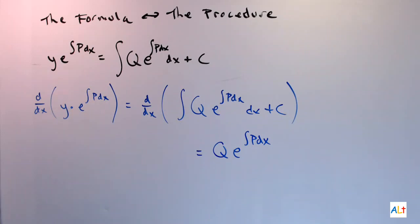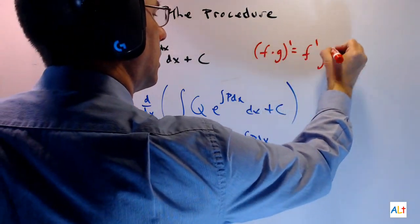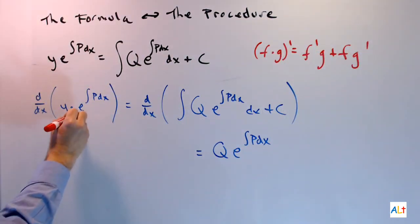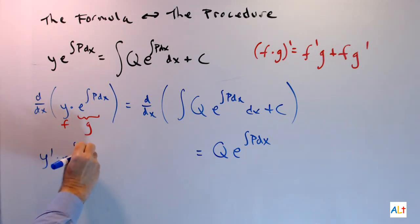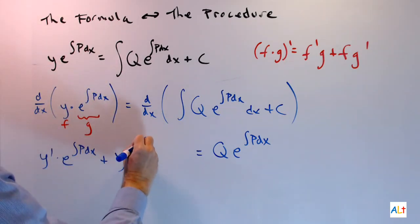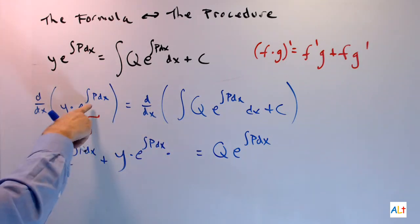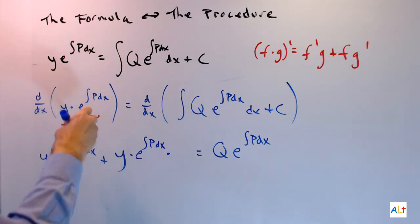What about the left side? Well, notice that we have a product. We have y being multiplied by this exponential function. And of course, a product calls for the product rule. So this will basically be f, and then this exponential function will be g. So we get f'g plus fg'. So there's f', also known as y'. There's g. And then I'm going to multiply by the derivative of g. The derivative of an exponential function always gets you the same exponential function back, but then you have to do the chain rule on the exponent and the derivative of the integral of p is just going to be p because, again, the derivative cancels the integral.